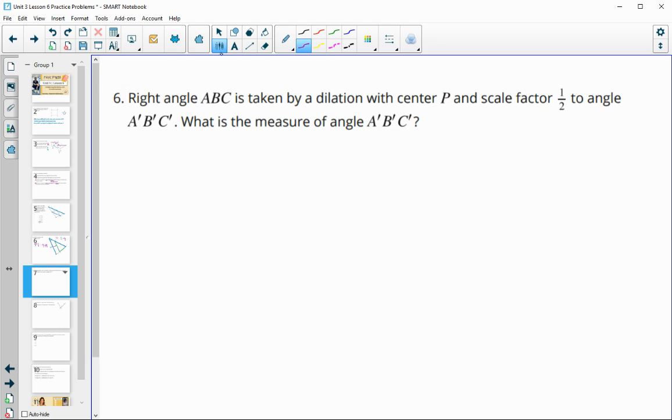Number six says that right angle ABC is taken by a dilation with a center of P and a scale factor of one half to angle A prime B prime C prime. What's the measure of A prime B prime C prime? So remember dilations do not change angle size. So since it started as a right angle, it's going to stay as a right angle that has a measure of 90 degrees.